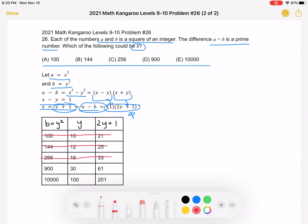If B is equal to 900, y is equal to 30. 2y plus 1 is equal to 61. That is a prime number, but let's just keep looking to make sure.